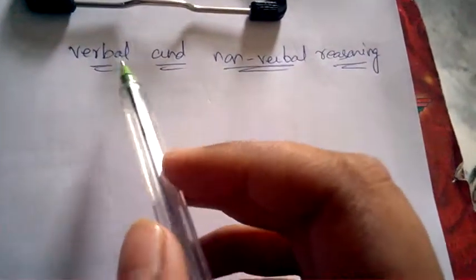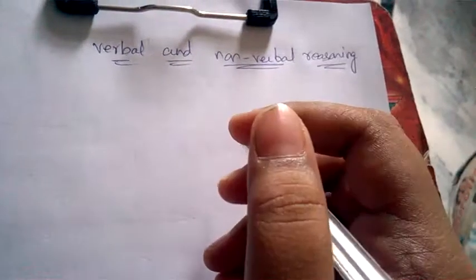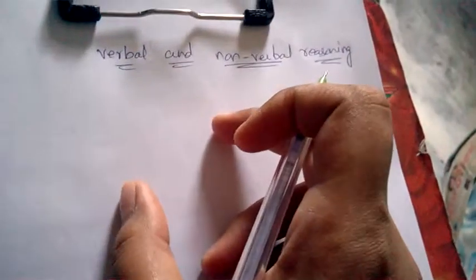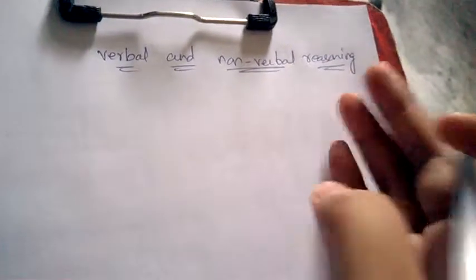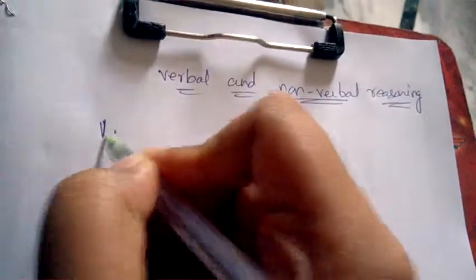Welcome back to Best Way to Study. This is a new session on CRT — verbal and non-verbal reasoning. CRT is the first written test, online or offline, in campus placements. Once you qualify in the written test, you are promoted to the next round. CRT includes verbal and non-verbal reasoning, and one of the topics is analogy.